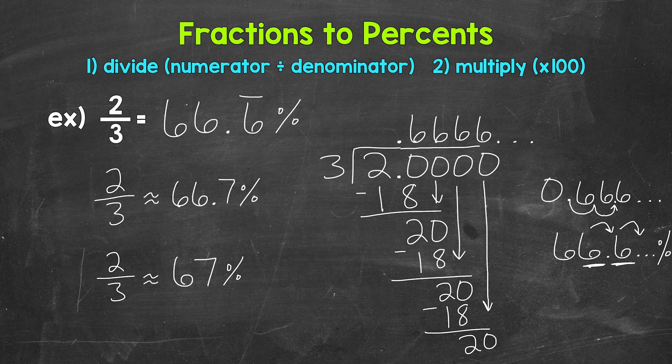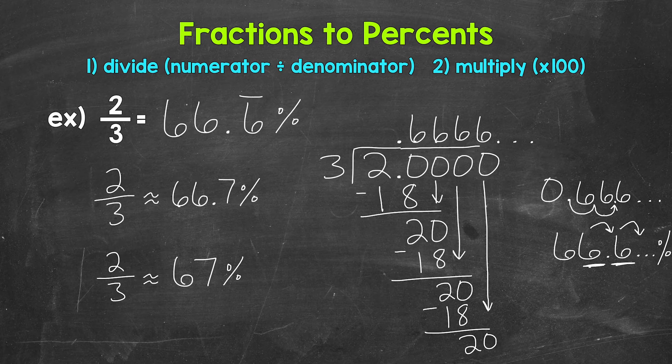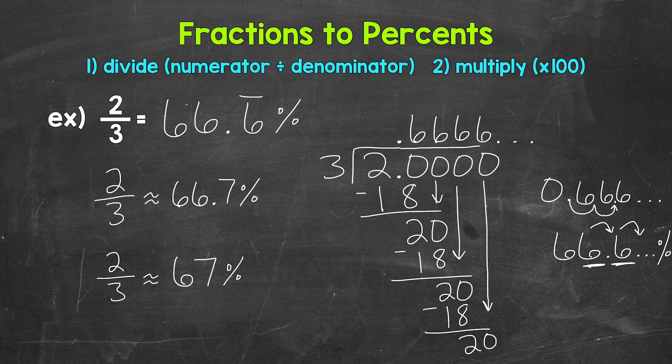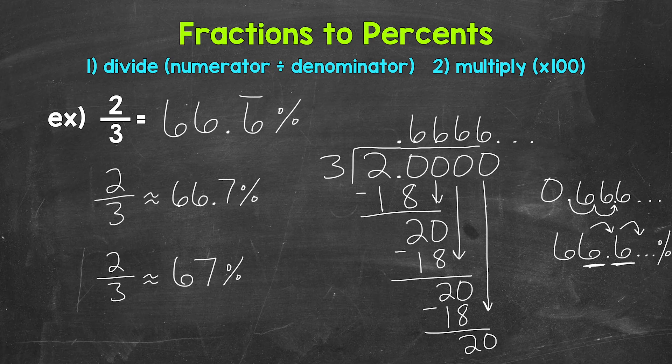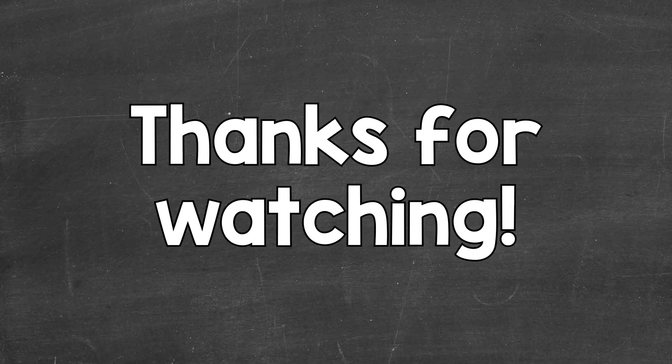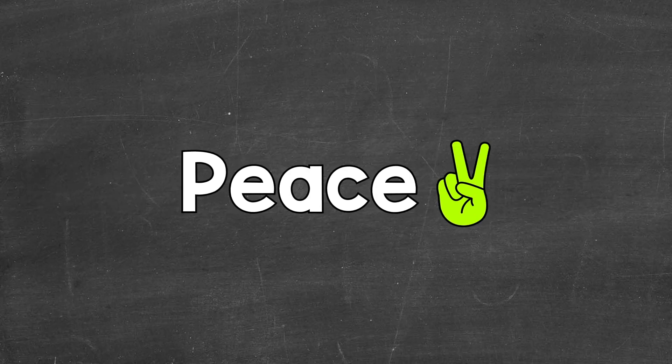So some different options there for writing out repeating decimals as percents. We can use a bar above any repeating digits to show that they are repeating, or we can round. So there you have it. There's how to convert two thirds to a percent. I hope that helped. Thanks so much for watching. Until next time. Peace.